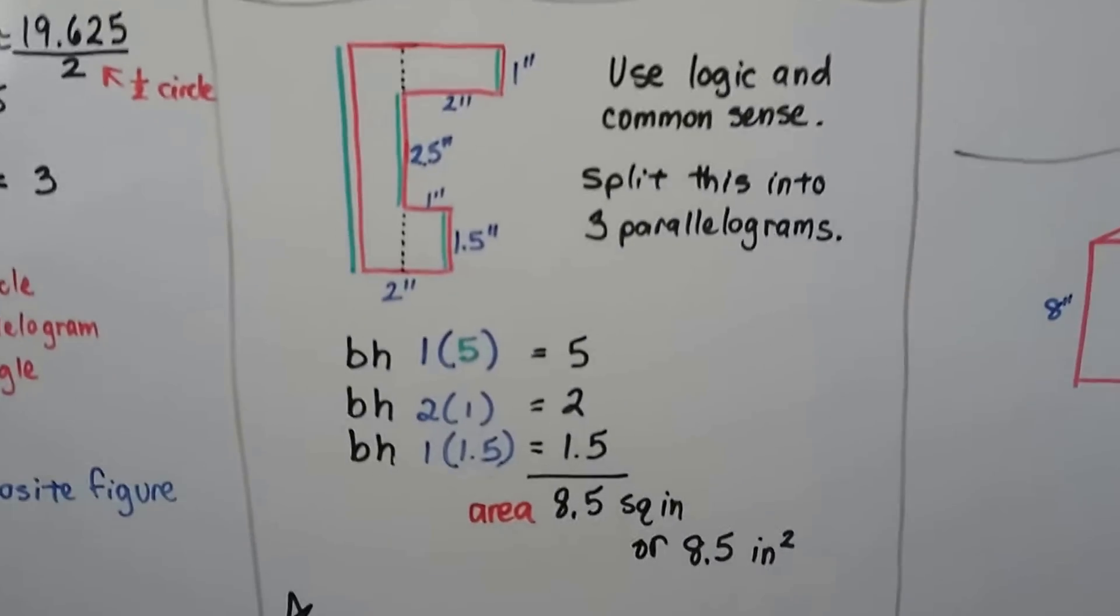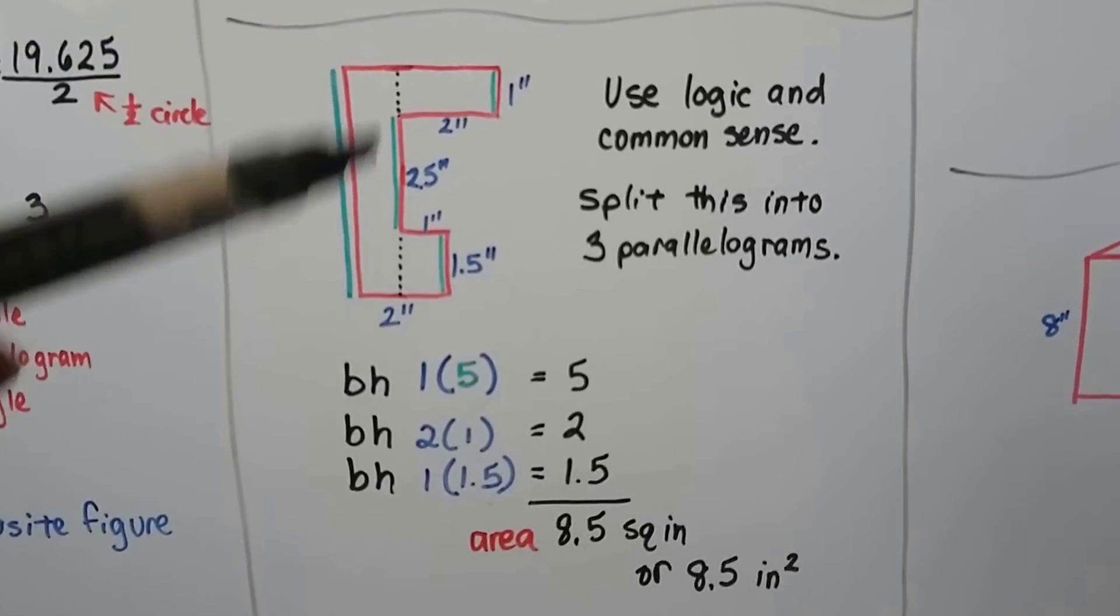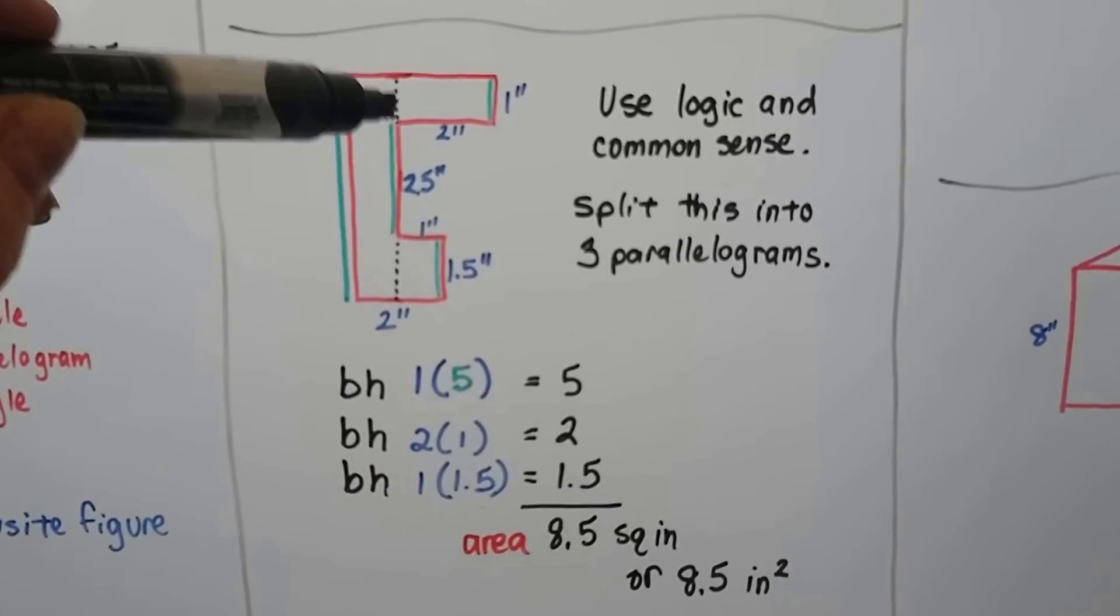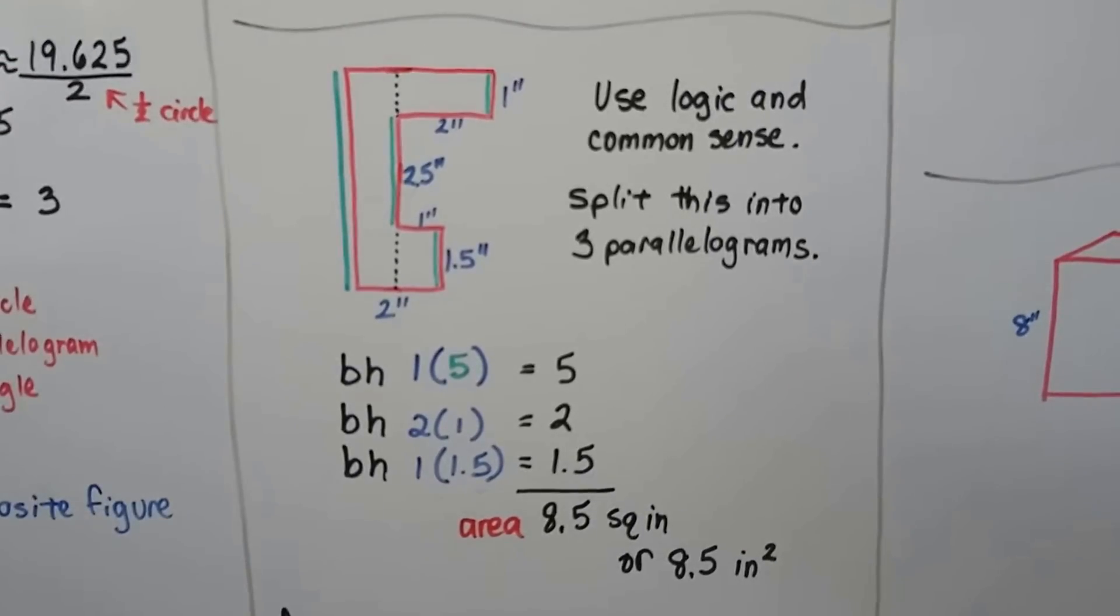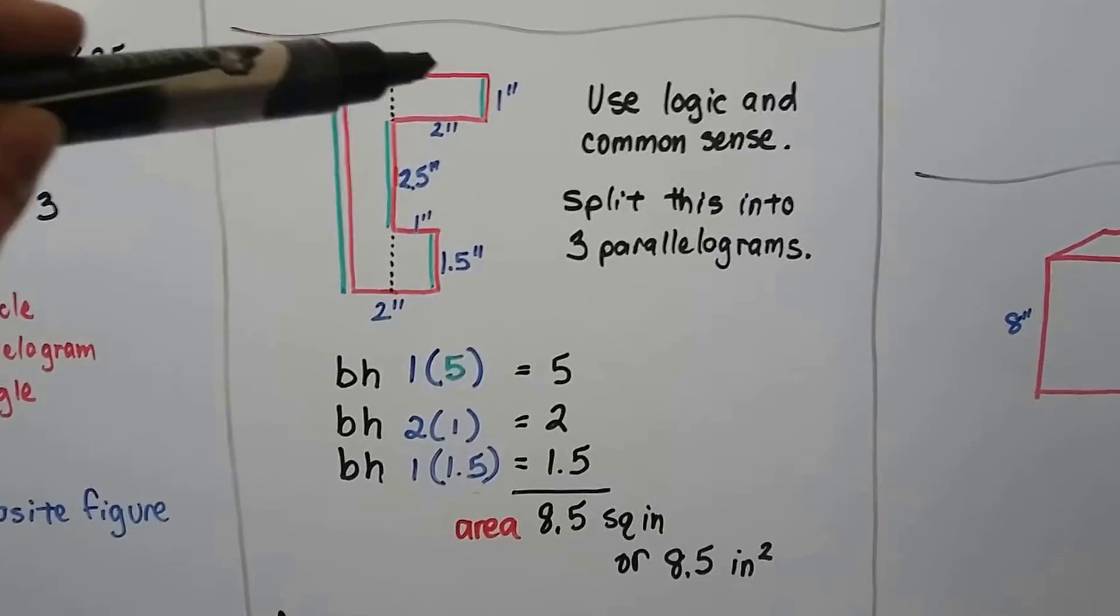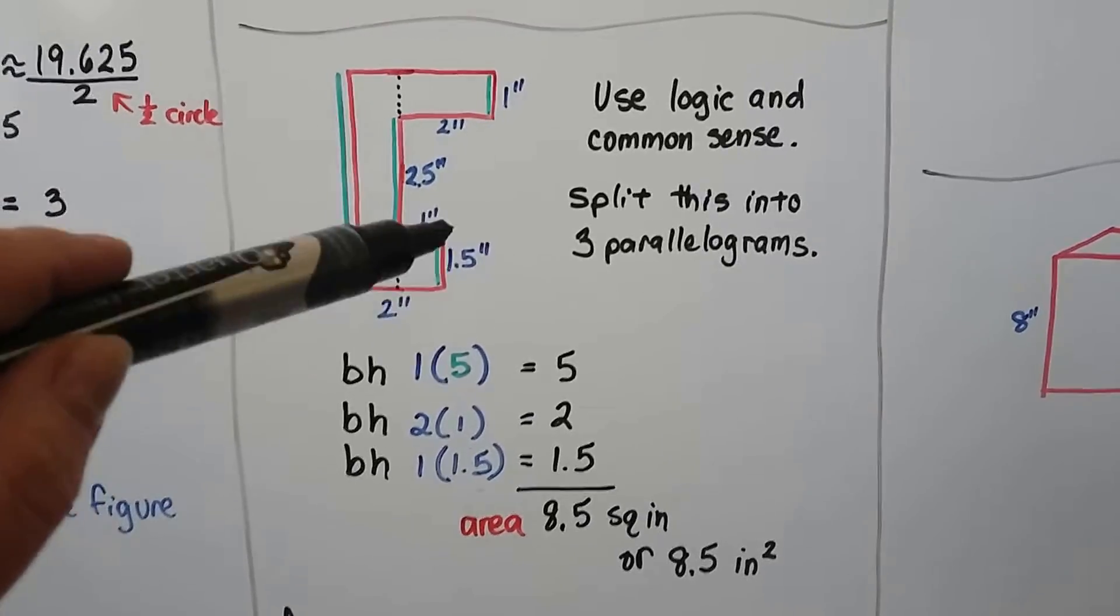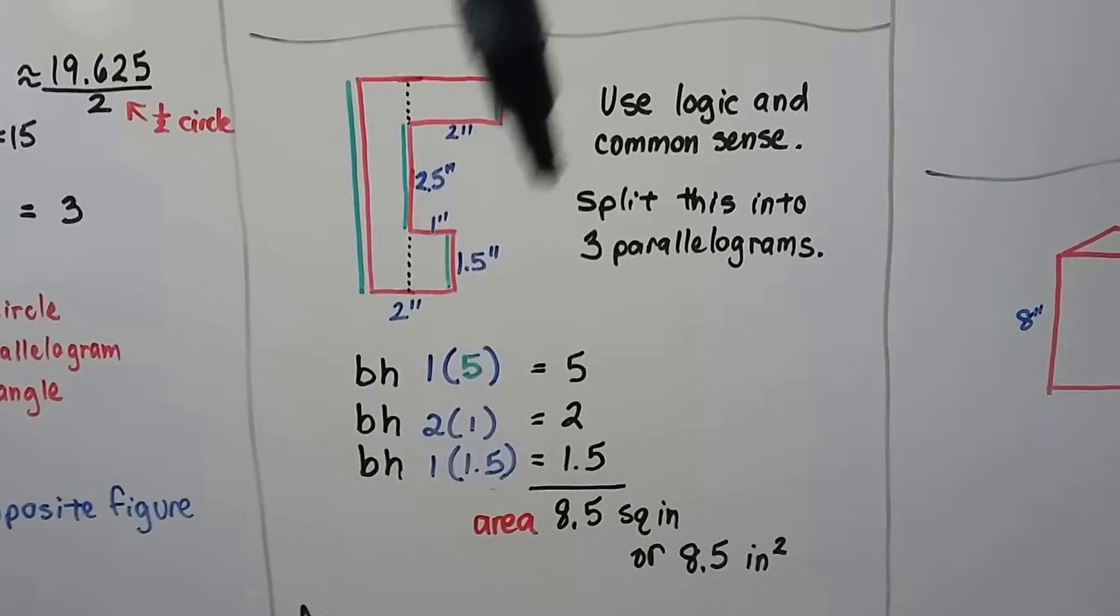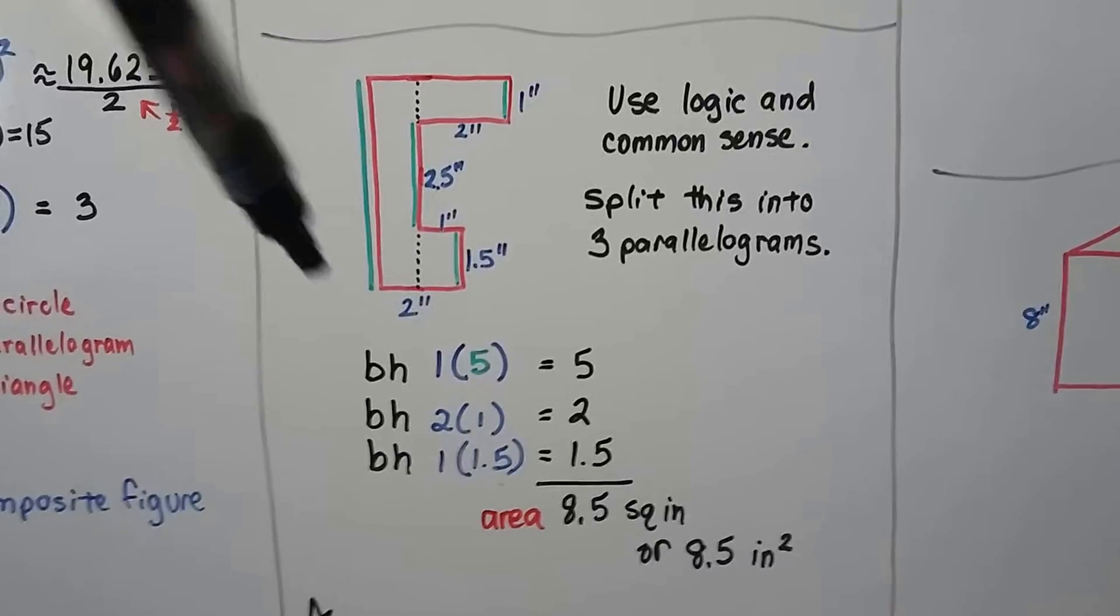We can also use logic and common sense. This can be split into three parallelograms, one, two, three. We can draw a dotted line here, and one here, or a very light line, and get three parallelograms. There's no measurements here, but if we use the vertical measurement one inch, this vertical measurement of 2.5, and this vertical measurement of 1.5, it's as if we brought the walls all in. We total these three vertical measures and get five inches.